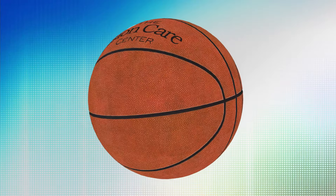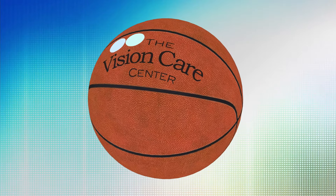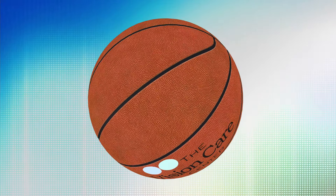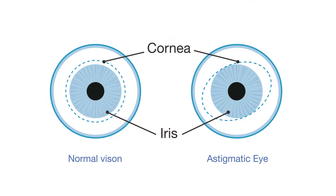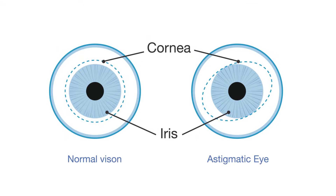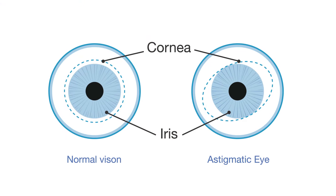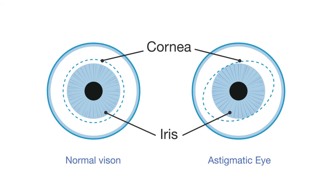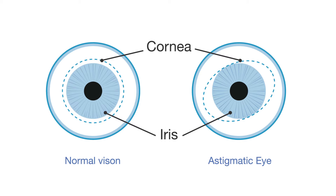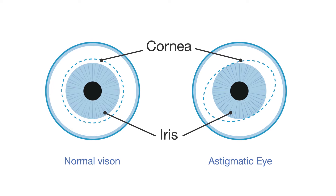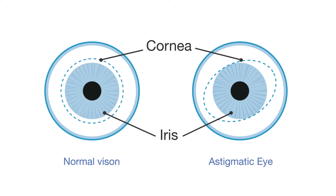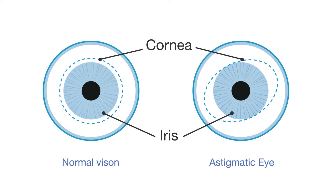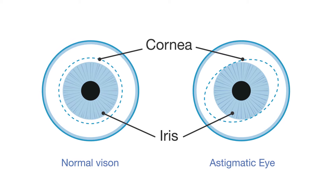We think of a basketball or a baseball or any other round ball as being perfectly spherical. The cornea is the main refractive surface of the eye, and that's most often where astigmatism occurs — whenever the cornea is not perfectly round or perfectly spherical.